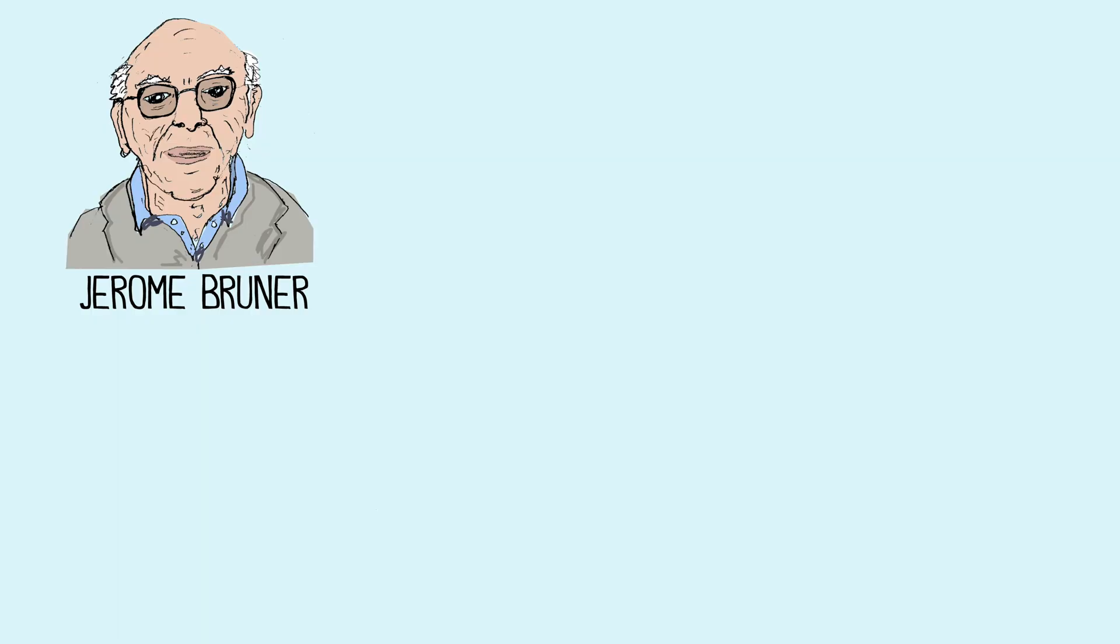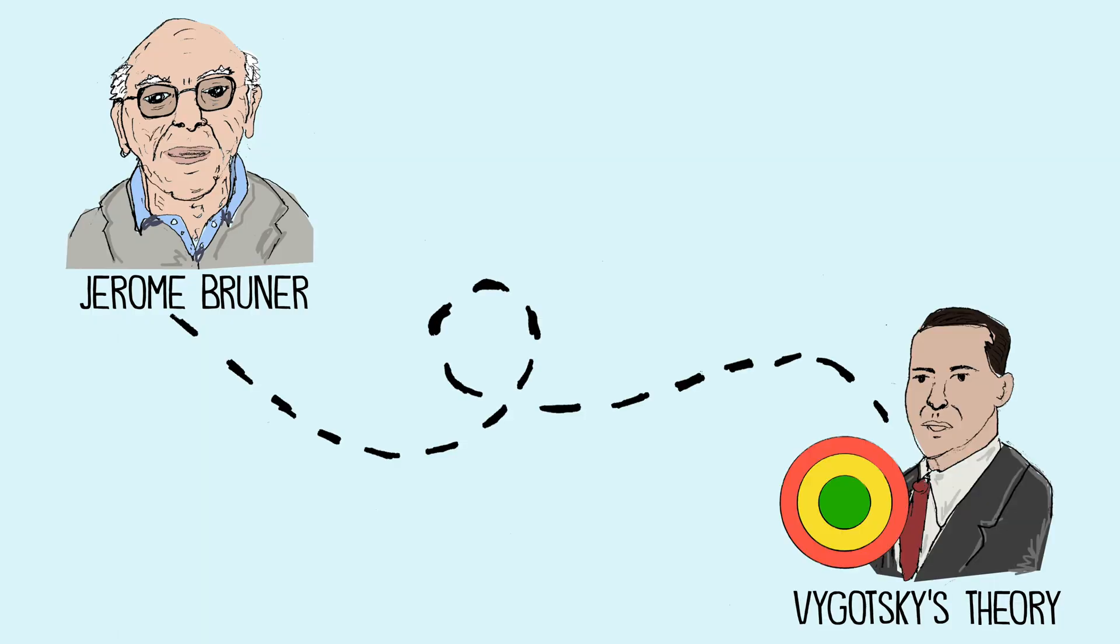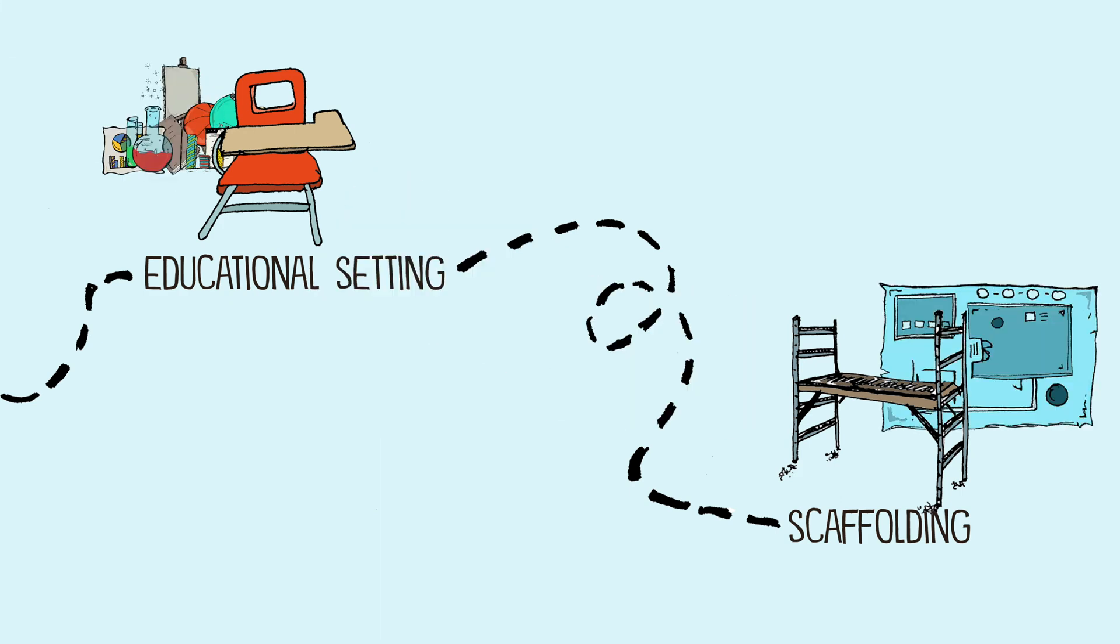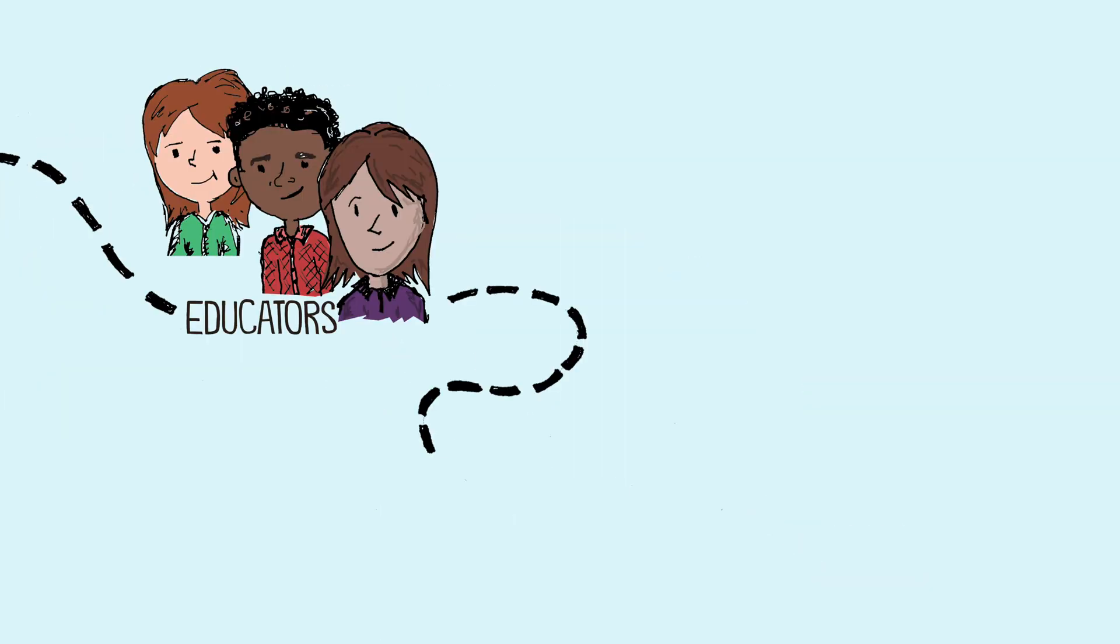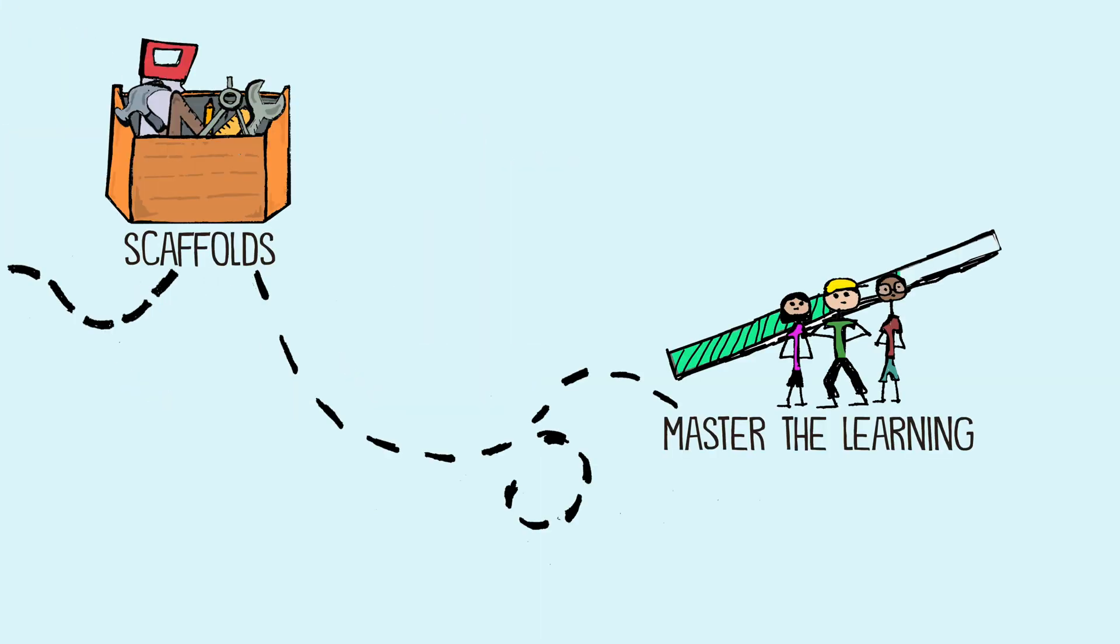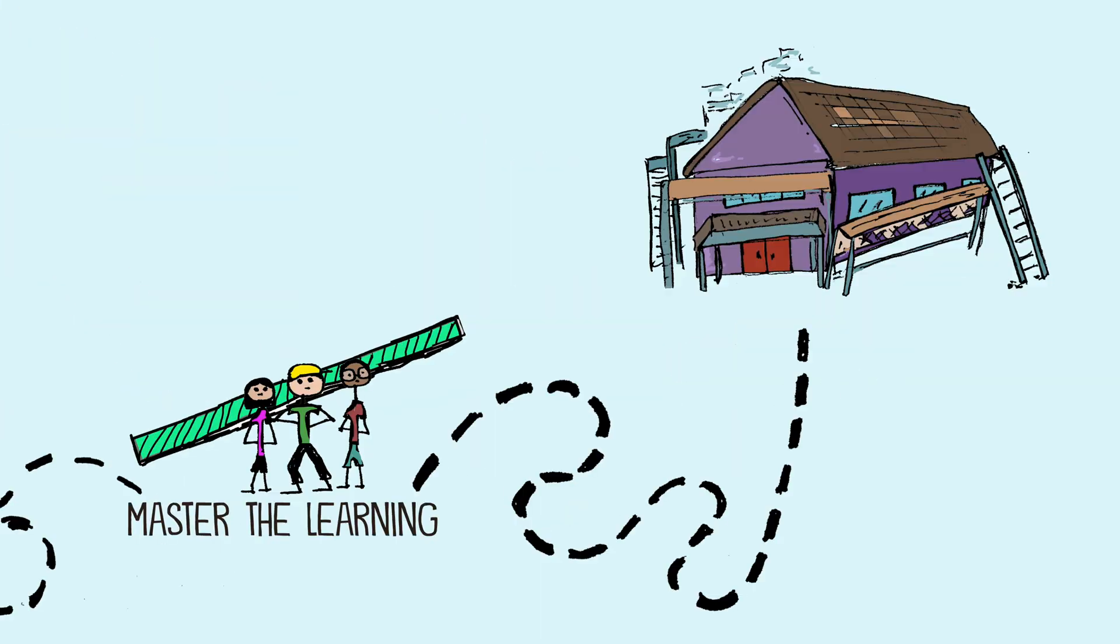In 1976, Jerome Bruner applied Vygotsky's theory to the educational setting with the concept of scaffolding. Here, educators provide supports, called scaffolds, to help students master the learning. Then, like the scaffolds in a building, teachers pull back the scaffolds as students master the knowledge and the supports become unnecessary.